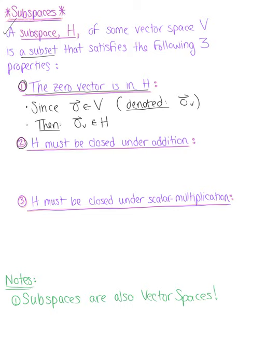Property two: the subspace must be closed under addition. So we can say for all vectors U and V in our subspace H, vector U plus vector V is also an element of the subspace.